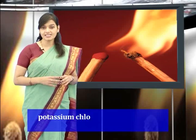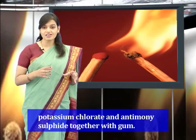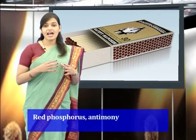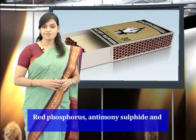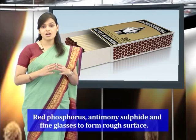We all use safety matches. Do you know that they contain red Phosphorus? The head of the matchstick consists of Potassium Chlorate and Antimony Sulphide together with gum. The striking surface consists of red Phosphorus, Antimony Sulphide and fine glass to form a rough surface.